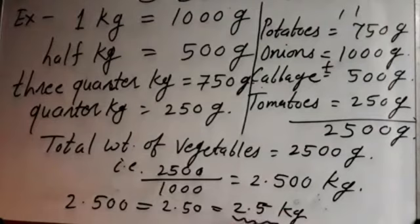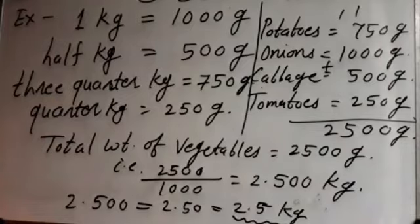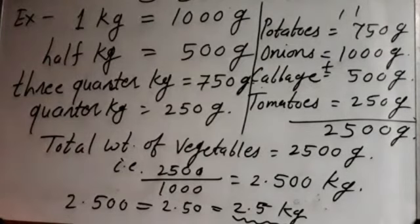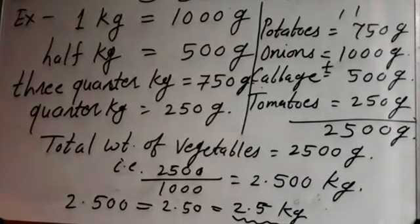That means the total weight of the vegetables is 2.5 kilogram, means 2 and a half kilogram. This is the weight of the vegetables — we have counted the total weight, which is 2.5 kilogram.